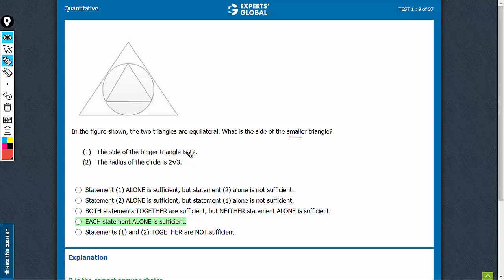Side of the smaller triangle is to be determined. If we imagine the center of the circle, the center of the circle would be the centroid for the smaller triangle also, and it would be the centroid for the bigger triangle also.